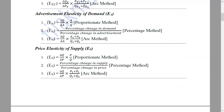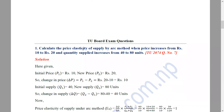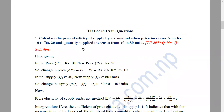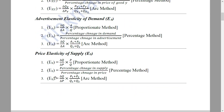Now, we have two board exam questions — from the 76 and 75 exams. So, in 2017, the price elasticity of supply is calculated by the ARC method. When price increases from Rs. 10 to 20, and quantity supplied increases from 40 to 80 units. We have to show the ARC method formula: Delta Q by Delta P, multiplied by P1 plus P2 by Q1 plus Q2.